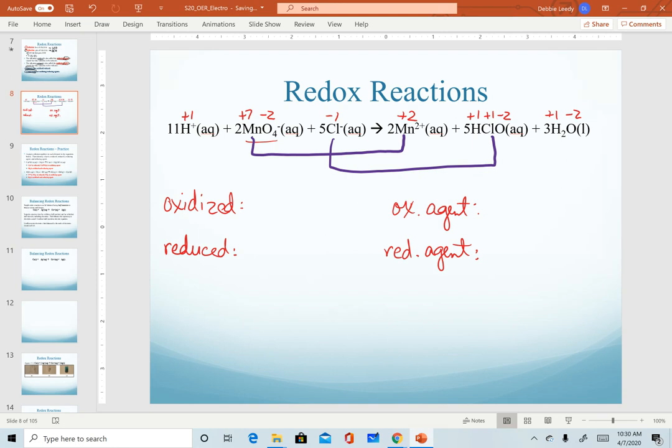Notice that manganese goes from a plus seven to a plus two. Its charge reduced. The only way that can happen is with the gain of electrons. To go from a plus seven to a plus two, it had to gain negatively charged electrons. The element that was reduced was the Mn plus seven.